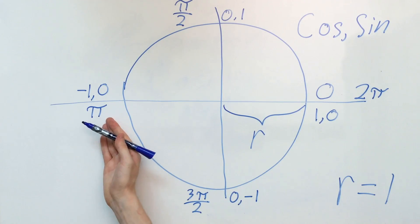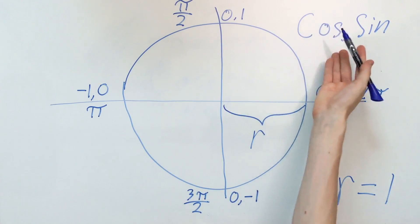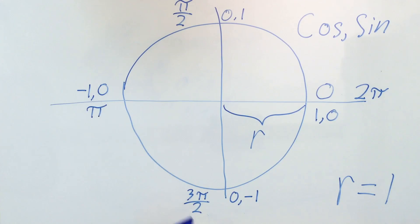Like, for instance, pi. Well, cosine and then punching in pi, that gives you negative 1. Sine, punching in pi, zero.